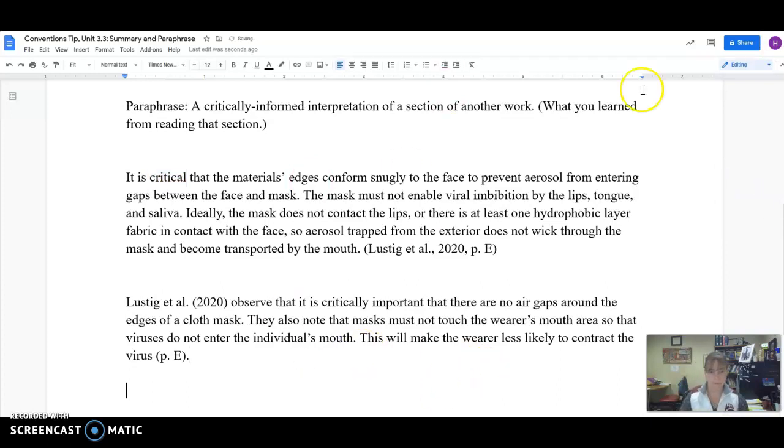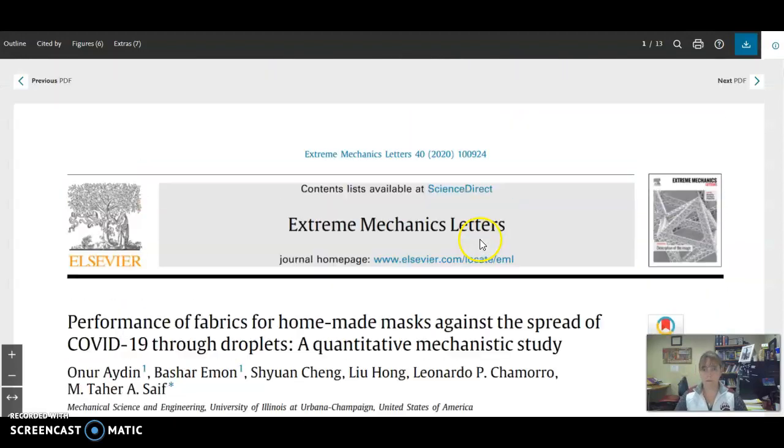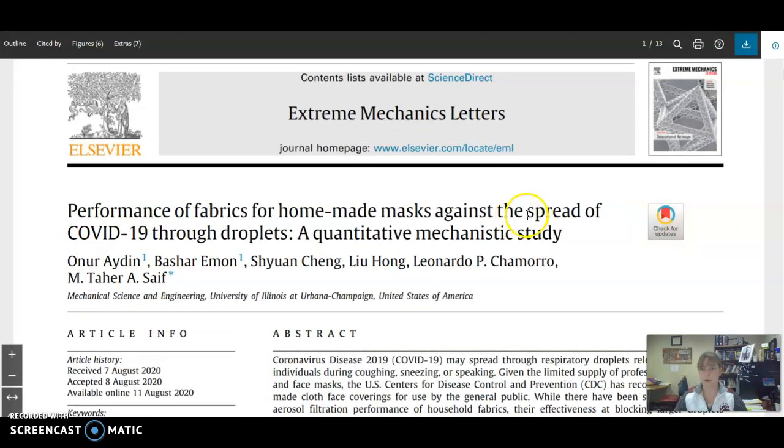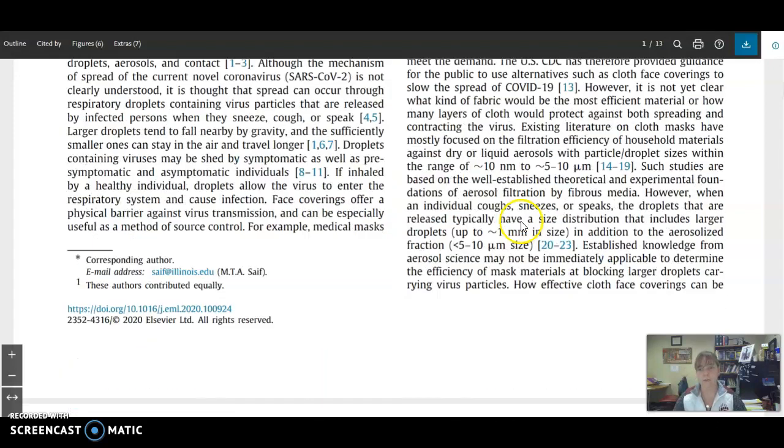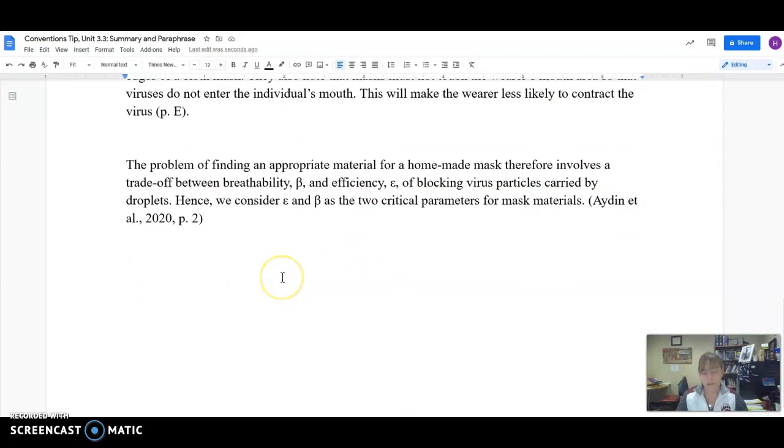Here's another example. In this study over here, this is another pretty technical piece. We're looking at this: The problem of finding an appropriate material for a homemade mask therefore involves a trade-off between breathability and efficiency of blocking virus particles carried by droplets. Hence, we consider efficiency and breathability as the two critical parameters for mask materials. Now I don't want to bring these little Greek letters into my paper because that's not going to help my reader at all.